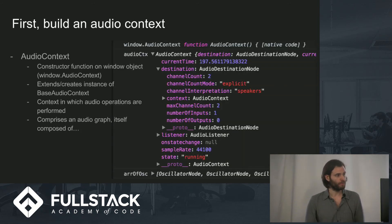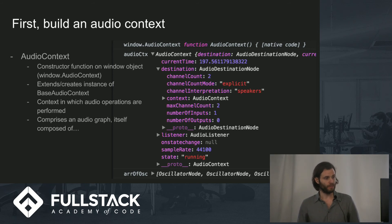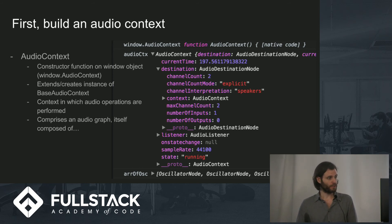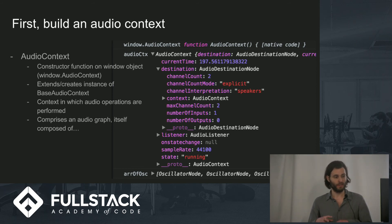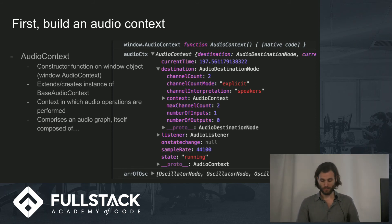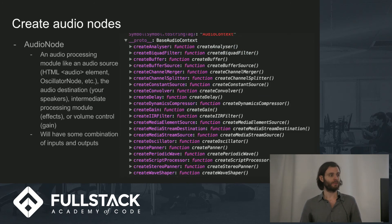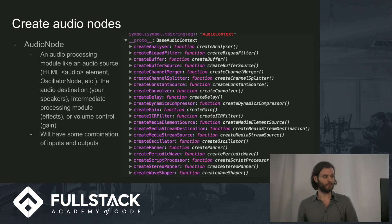Let's make something. First, you build an audio context — it's similar to building a canvas. It's a constructor function on the window object. You have an audio context, and you can see the destination that we're going to end up hooking into. It creates an instance of the base audio context, which is in the API. The context is where the audio operations are occurring — it's an audio graph, and it's composed of audio nodes.